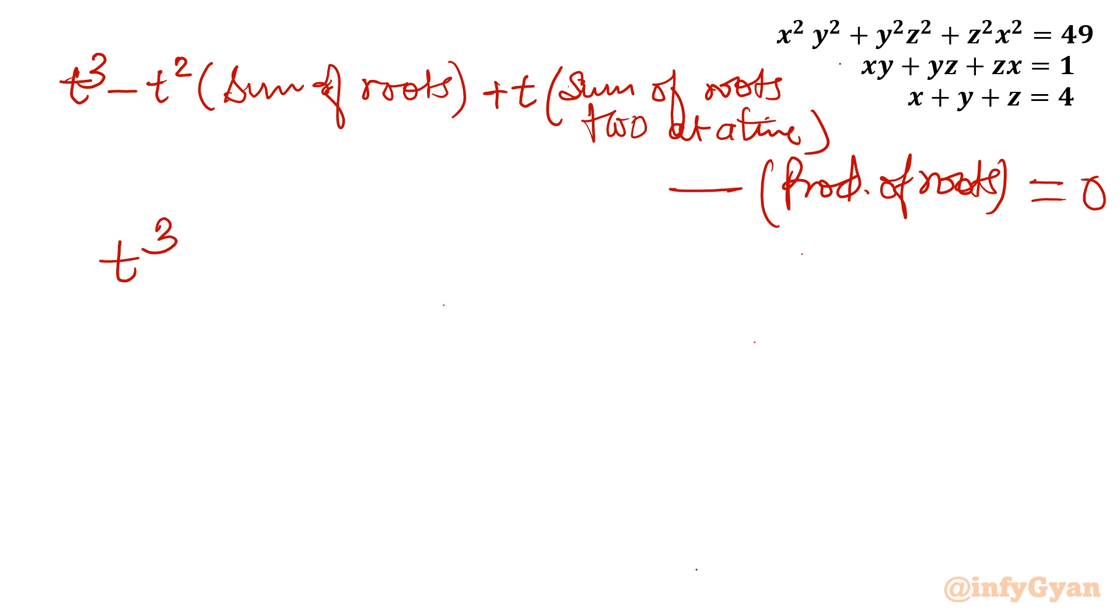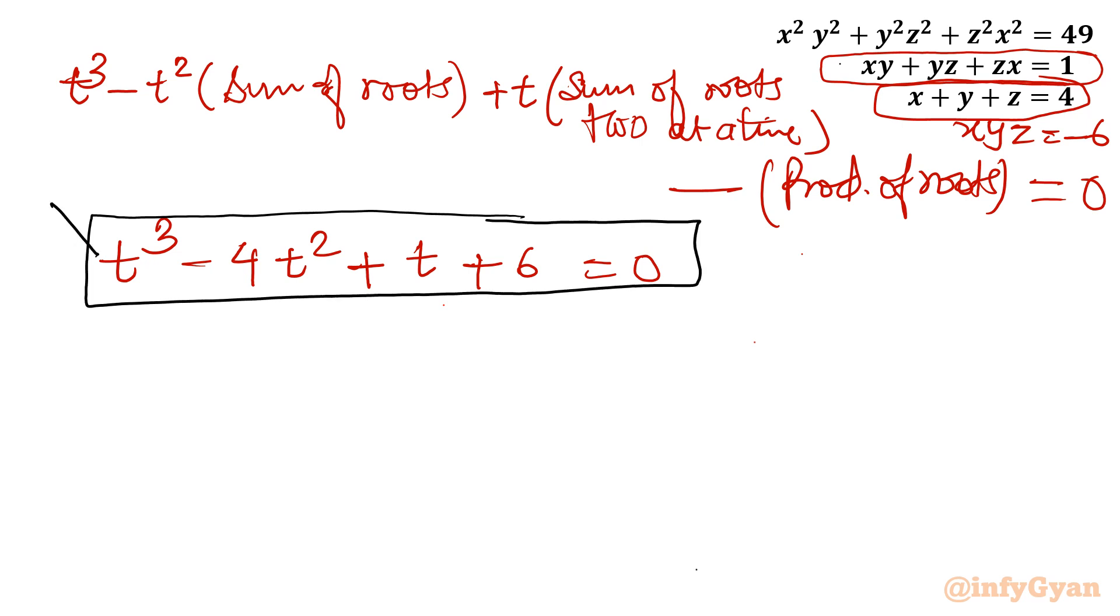So let's consider variable is t. I will write our equation as t cubed minus sum of roots, so it is 4, I will write 4t squared. Sum of roots taken 2 at a time, so it is given to us as equation number 2: 1, so I will be writing here t. Product of roots we have just calculated, it was minus 6, so I will write here minus of minus 6, so plus 6 equals 0. This is one cubic equation. We have to find solution of this equation for our solutions x, y, z. So t is x, y, and z.